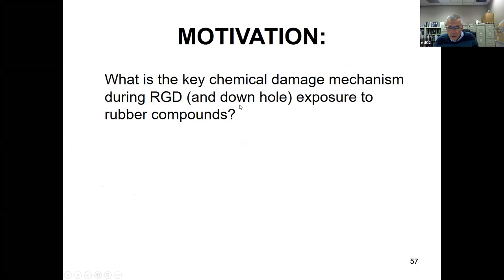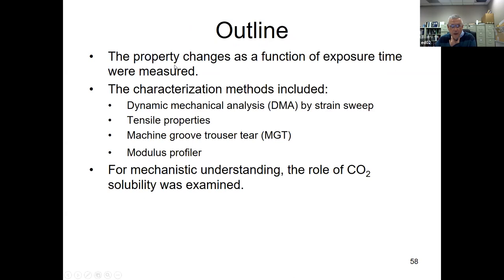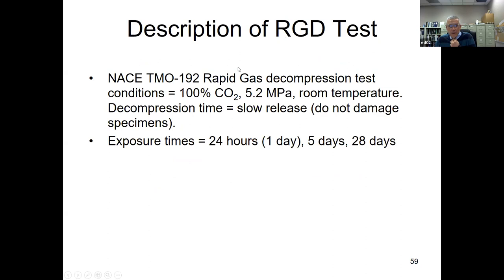Scope of the work: three downhole formulations — FKM, HNBR, and NBR — using the NACE TMO 192 downhole simulation test method. The damage mechanism was elucidated by various characterization tests. The RGD test conditions: 100% CO2, 5.2 MPa (approximately 750 psi) at room temperature, with slow release decompression to prevent specimen damage. Exposure time was varied from one day to 28 days.